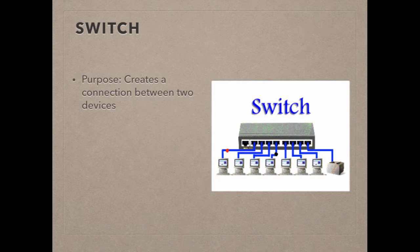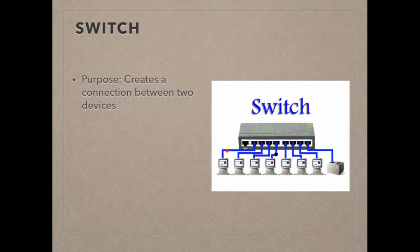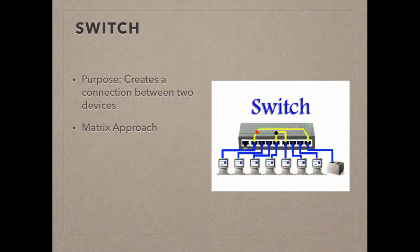A switch is a device used on a computer network to physically connect devices together. Many cables can be connected to a switch to allow network devices to communicate with each other. A switch connects devices in one of two ways. The first method is using a matrix approach, where multiple channels in a switch are paired into an input and output channel. When data comes into a channel, it will leave through its paired output channel to a specific computer.